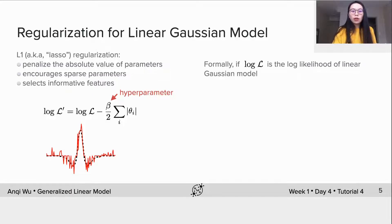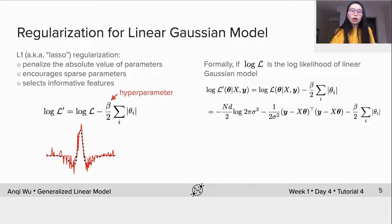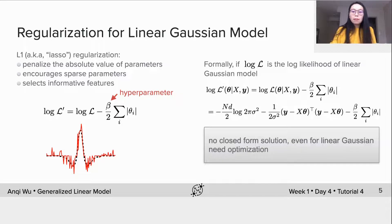The log likelihood of linear Gaussian with L1 penalty is very similar to L2. I'm not going into the derivation here, but all you need to remember is it doesn't have a closed form solution, even for linear Gaussian model. The reason is the absolute value of theta is non-differentiable, thus we need optimization to fit the model.